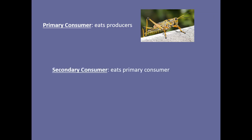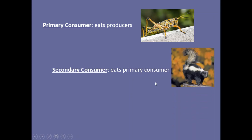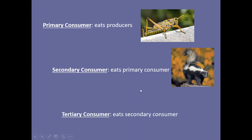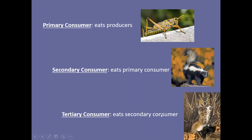A secondary consumer eats these primary consumers — they eat guys like the grasshoppers. So that could be like a skunk; skunks eat bugs. After secondary consumer comes tertiary consumer. These guys eat secondary consumers. So what might eat a skunk? Well, owls do.